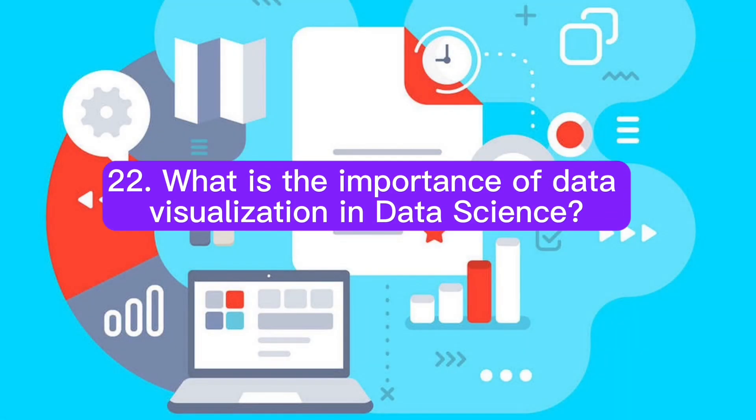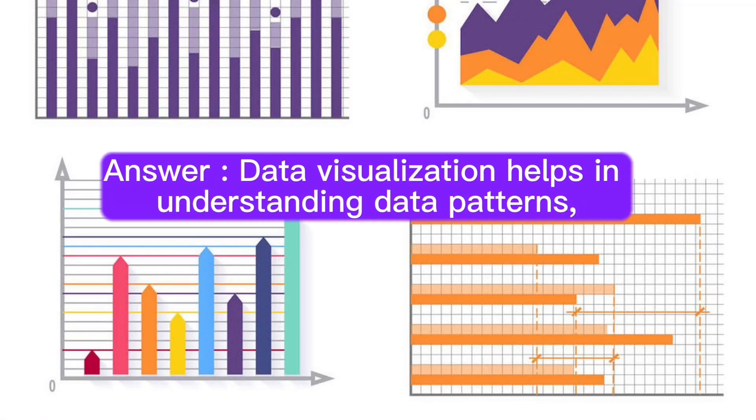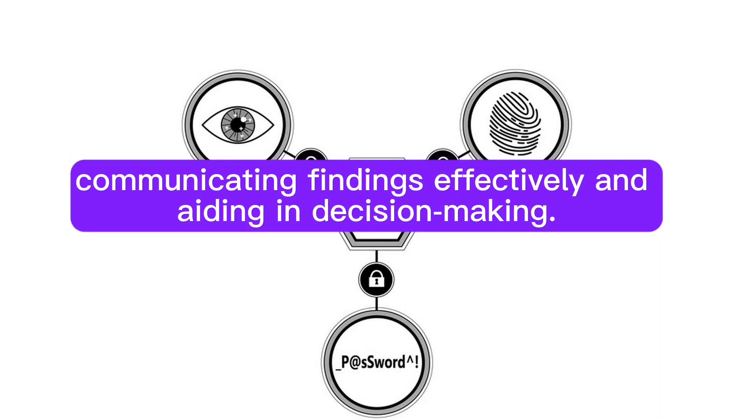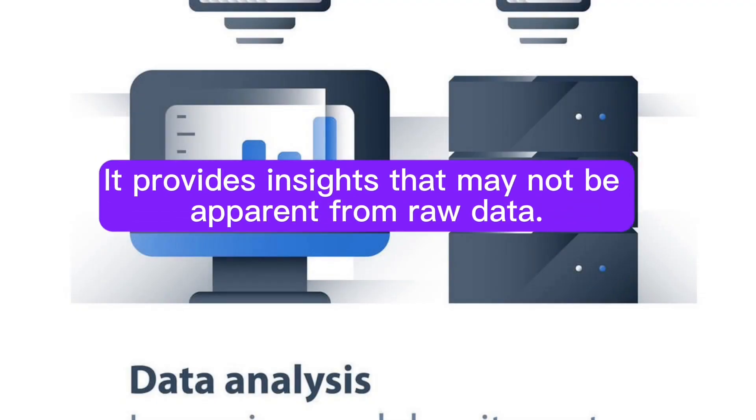Question 22: What is the importance of data visualization in data science? Answer: Data visualization helps in understanding data patterns, communicating findings effectively, and aiding in decision making. It provides insights that may not be apparent from raw data.